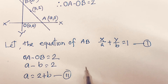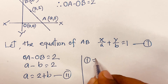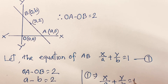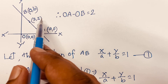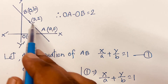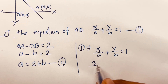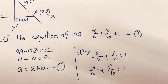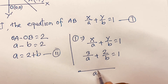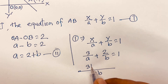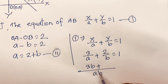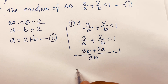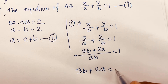Our equation is x/a + y/b = 1. We know the point (3, 2) lies on this line, so substituting: 3/a + 2/b = 1. Multiplying through by ab gives 3b + 2a = ab.